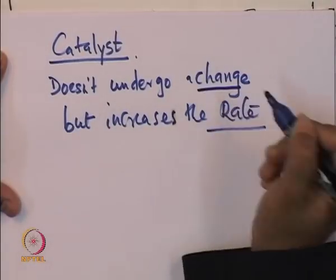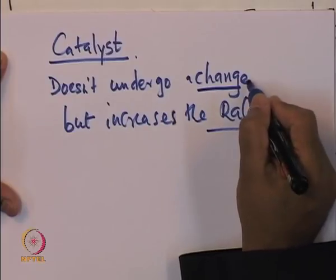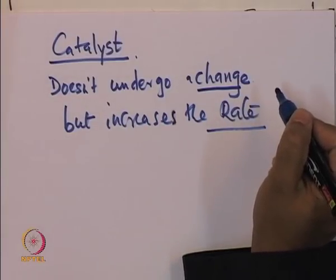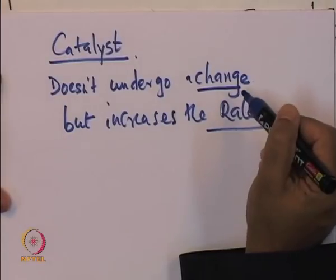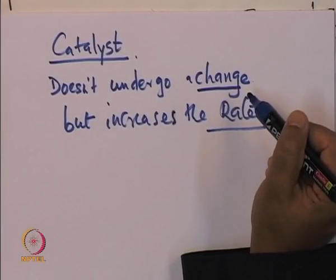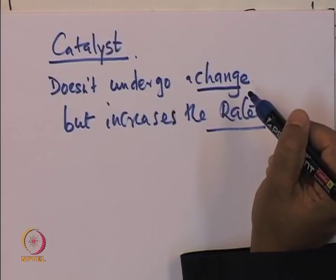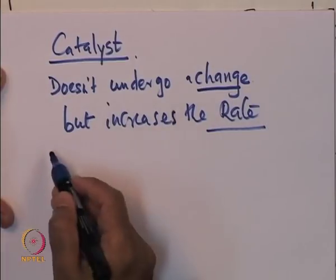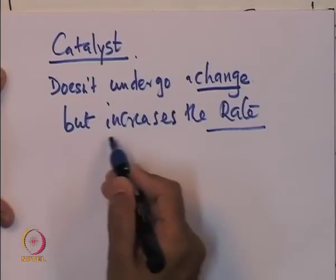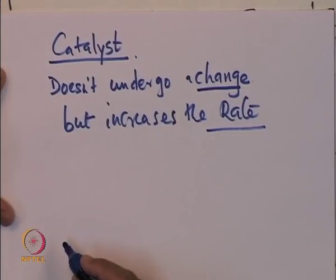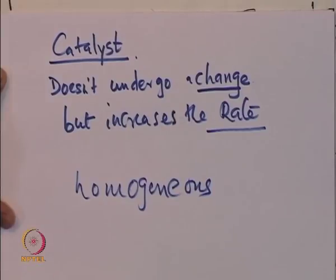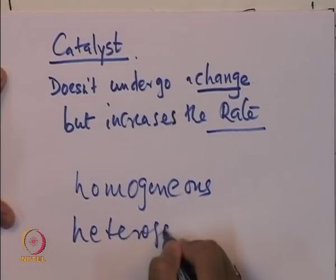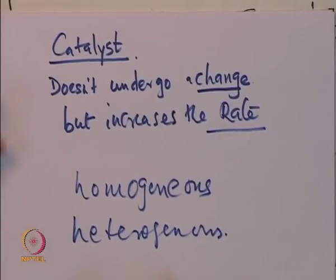It may undergo a change temporarily, but at the end of the reaction the catalyst comes out in the form that you started with. Of course, deactivation is a different thing, but otherwise if deactivation is not taking place the catalyst comes out of the reactor as such. So what is it doing? It is increasing the rate of the reaction. There are many types of catalyst — it can be homogeneous and it can be heterogeneous, depending on the phase in which it exists.